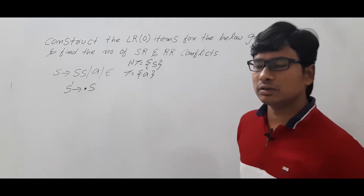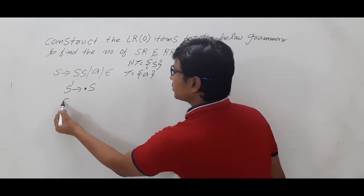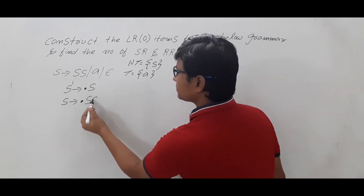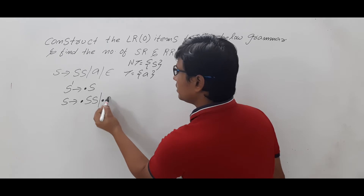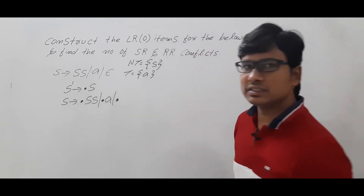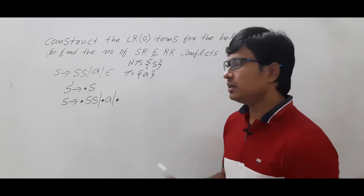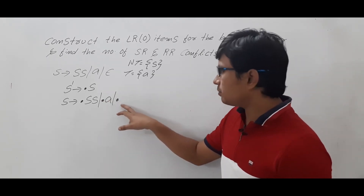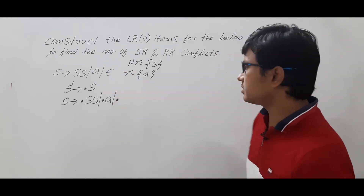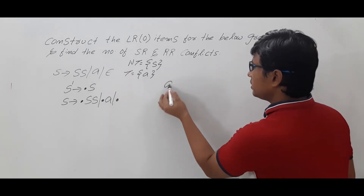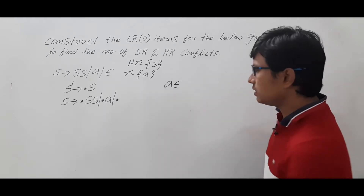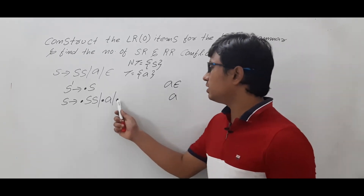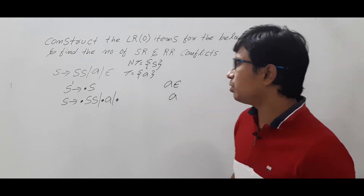After the dot there is a non-terminal S, so I need to compute the closure. S → •S or •A or dot-epsilon, because it is an epsilon. Even if you write it or do not write it, it is an item only, because A concatenated with epsilon is just A. So even if I do not write epsilon here, it does not matter.